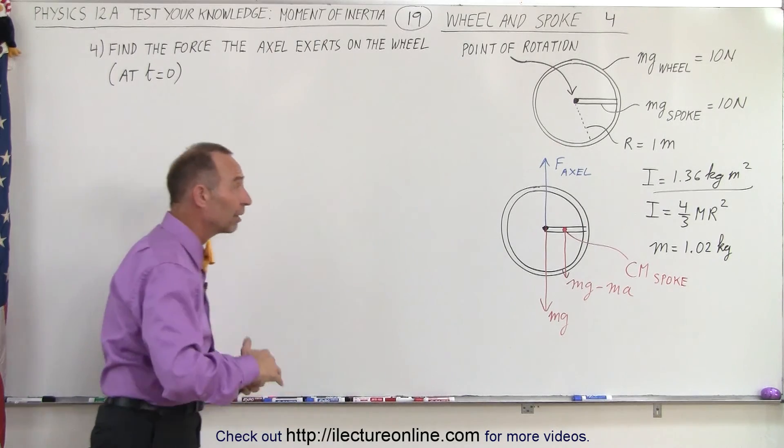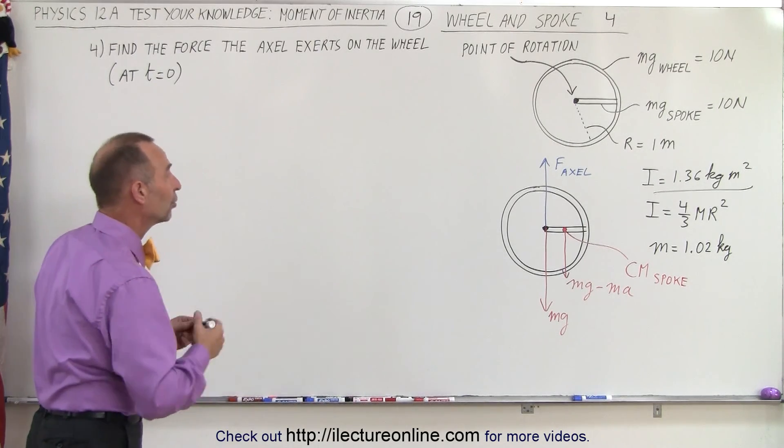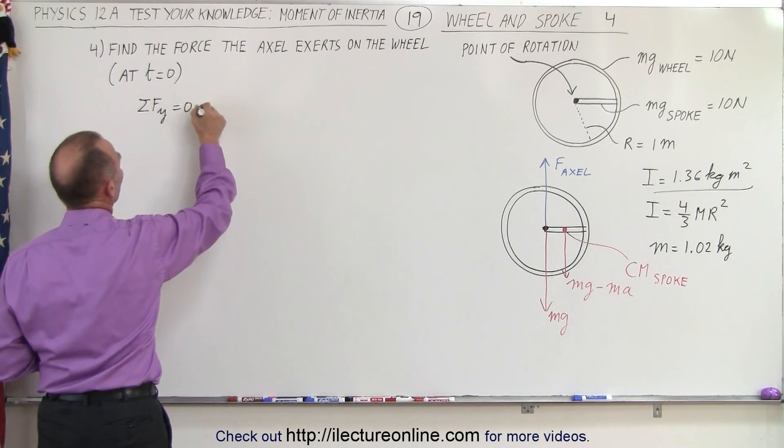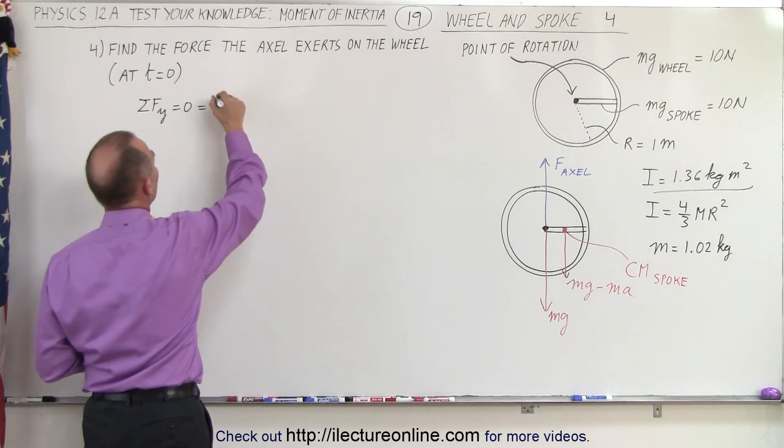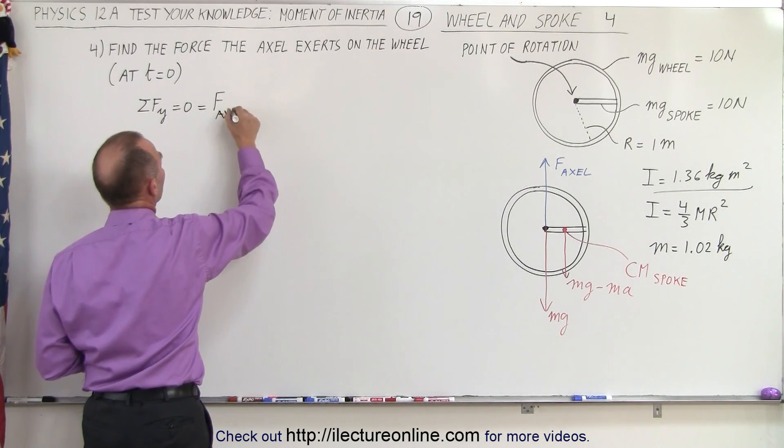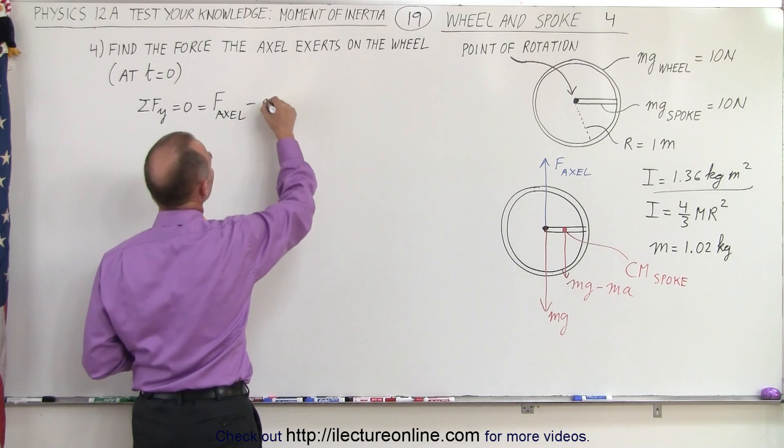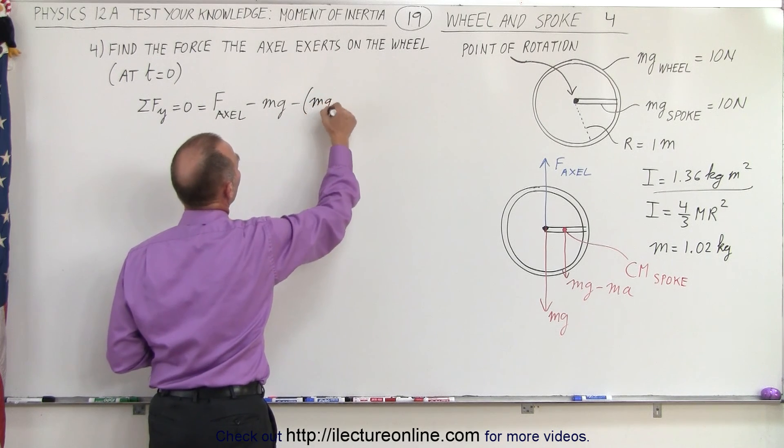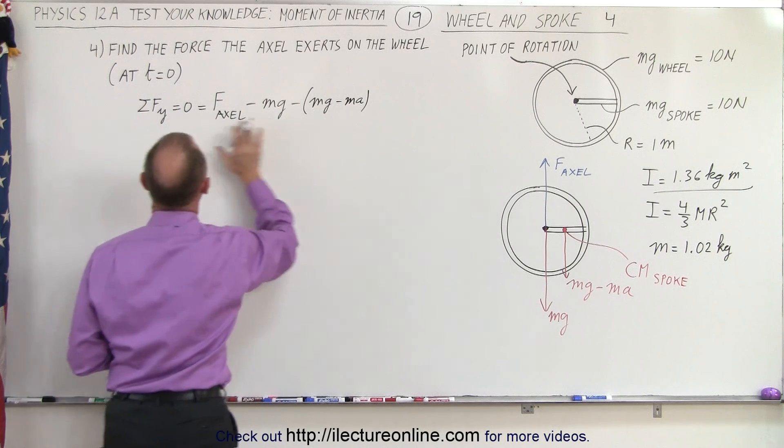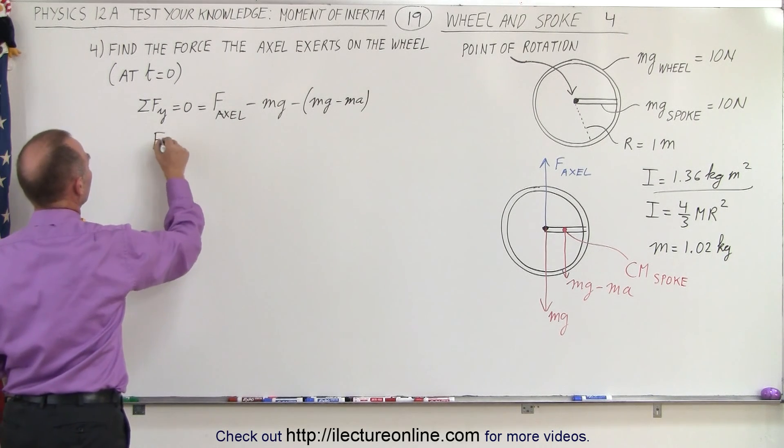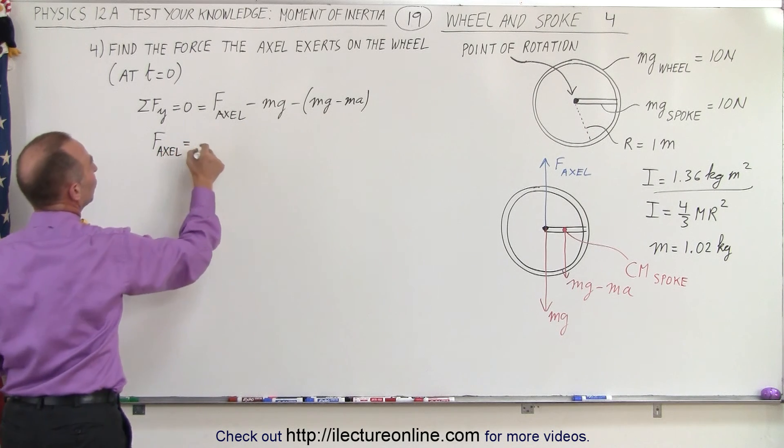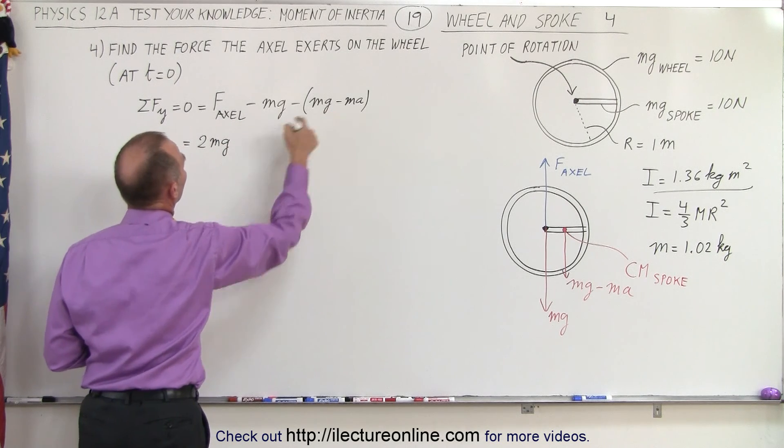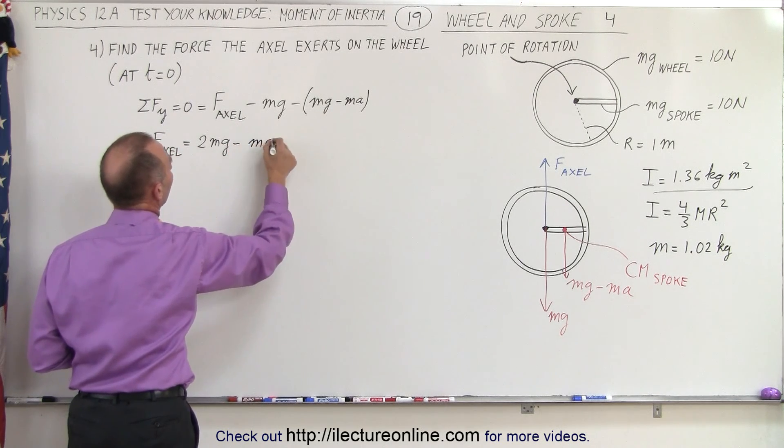So that means that if we sum up all the forces in the y direction, that should add up to zero. The sum of all the forces in the y direction equals zero, which is equal to the force of the axle upward minus the weight of the wheel and minus the effective weight of the spoke, that would be mg minus ma, and that all adds up to zero. So the force of the axle is equal to mg plus mg, which is 2mg, and that minus times a minus becomes negative, so minus m times a.